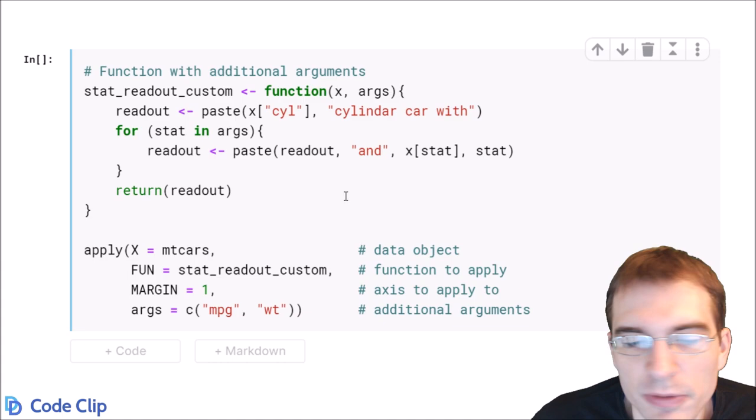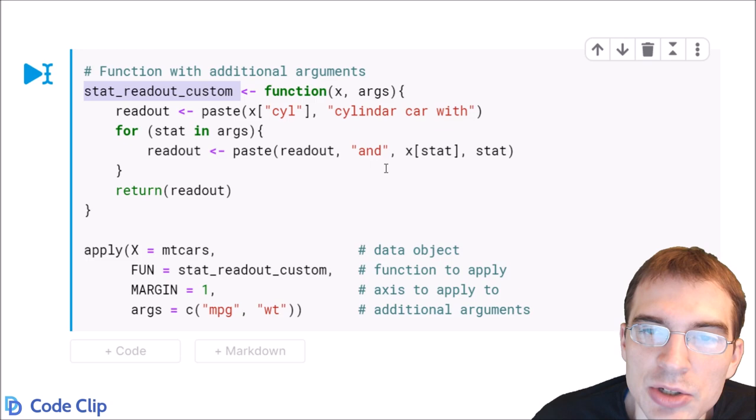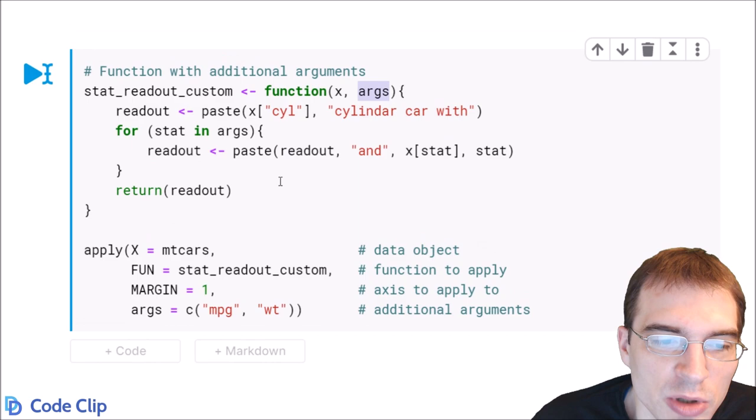We've here defined another custom function, stat readout custom. This time it takes two arguments, x and another argument called args that is going to be a vector of other arguments that the function is going to use. So if we want to apply this function, we have to specify what these additional arguments are going to be.